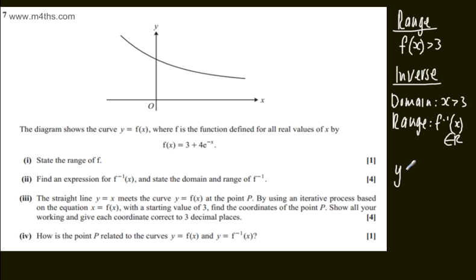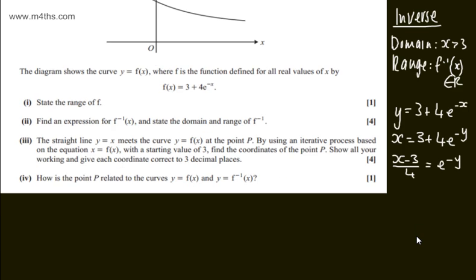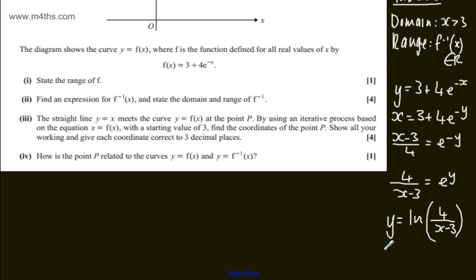Let's now look for an expression for f to the minus 1. So we want the inverse. I'm going to let y equal 3 plus 4e to the minus x. I'm going to swap the x's and y's and set about making y the subject. So x equals 3 plus 4e to the minus y. Subtracting 3 from both sides, dividing by 4, x minus 3 over 4 equals e to the minus y. I can invert these fractions and write 4 over x minus 3 equals e to the positive y. Remember, e to the minus y is 1 over e to the y. Writing the equivalent log statement, y will equal the natural log of 4 over x minus 3. Using the notation f to the minus 1 of x, the inverse function is the natural log of 4 over x minus 3.